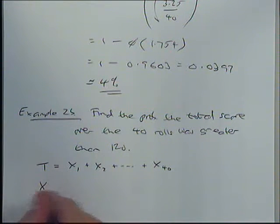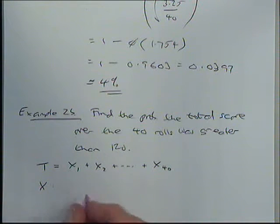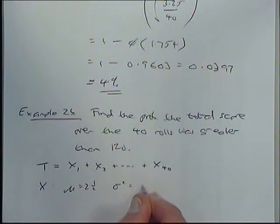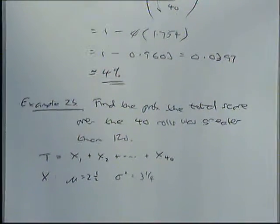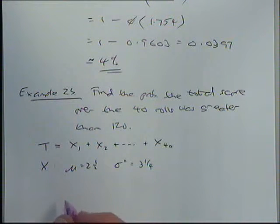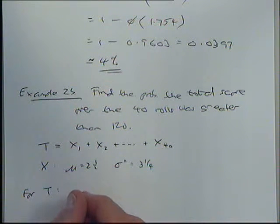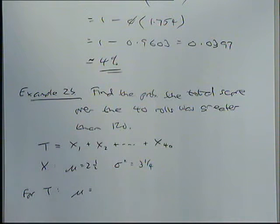So just as a recap, for a random variable X, we knew that mu was 2.5 and that sigma squared was 3.25. So for T, what do you think the mean is? What do you think mu is going to be for T?